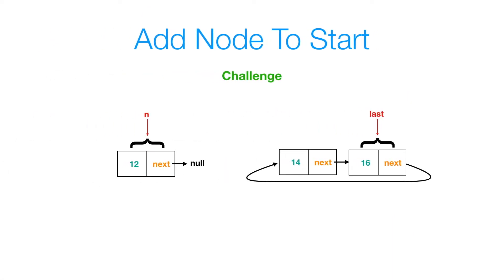Let's move on to adding a node to the start of the list. I challenge you to add node n with data 12 to the start of this list — so you'd have 12, then 14, then 16, and 16's next would reference n. Press pause and give this a try; press play to see the solution.